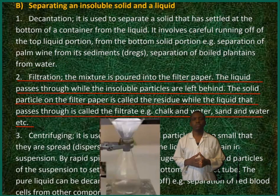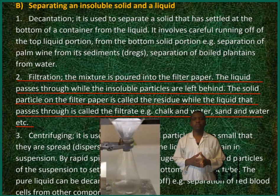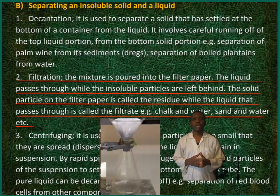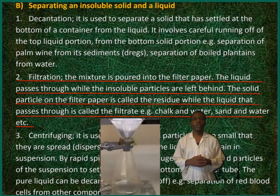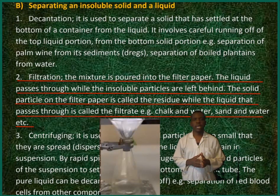Method 2: Filtration. The mixture is poured into filter paper. The liquid passes through while the insoluble particles are left behind. The solid particle remaining on the filter paper is called the residue, while the liquid that passes through is called the filtrate. Examples include chalk and water, and sand and water.